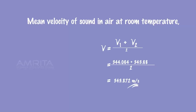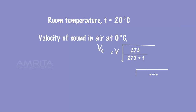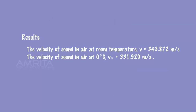Using the value of velocity of sound in air at room temperature, calculate the velocity of sound in air at 0 degrees Celsius. The velocity of sound in air at room temperature is 343.872 meters per second, and the velocity of sound in air at 0 degrees Celsius is 331.929 meters per second. Thank you.